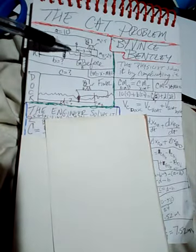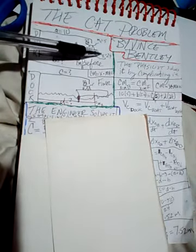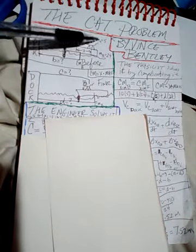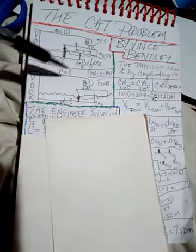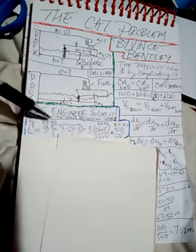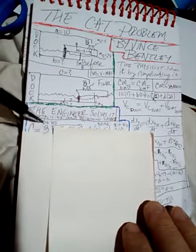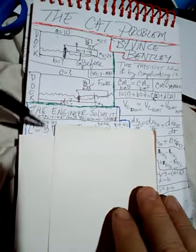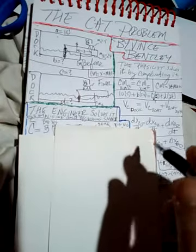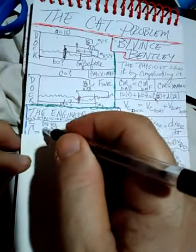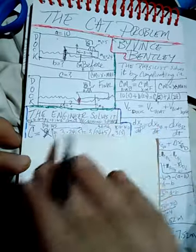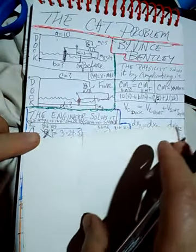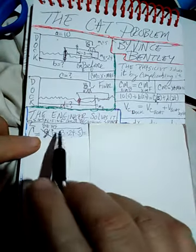With a boat this small — although it is almost five times more massive than the cat — the boat will still move. So the guess of three meters would only be good for a big boat. The engineer will guess smart, so he'll knock out three as the answer.